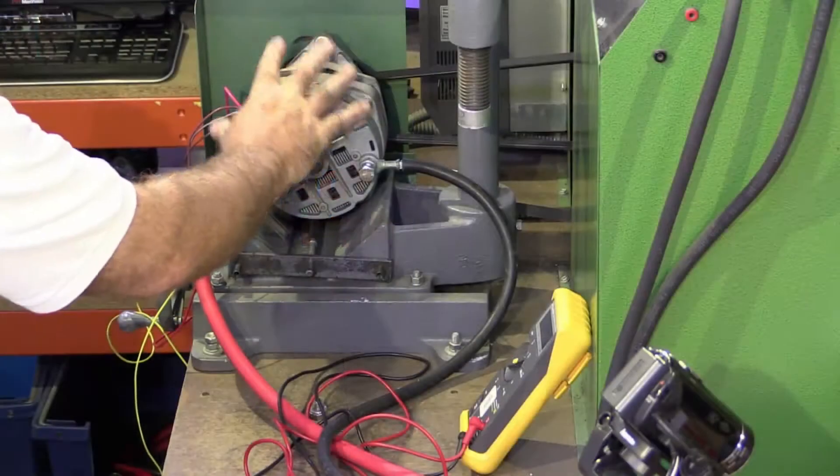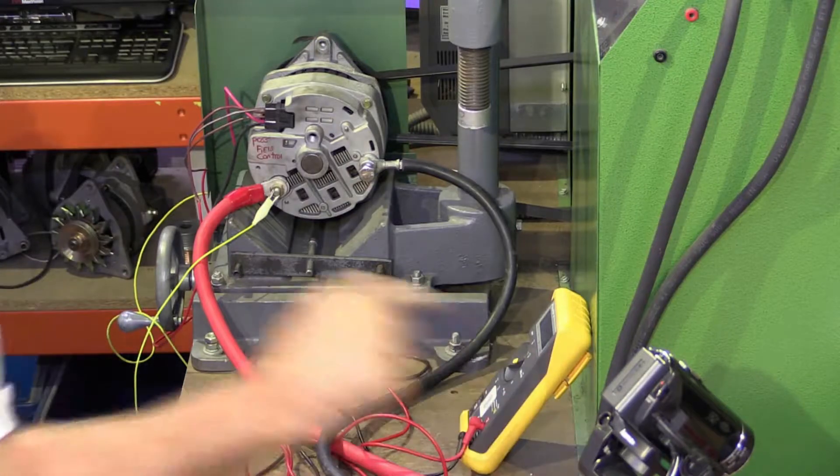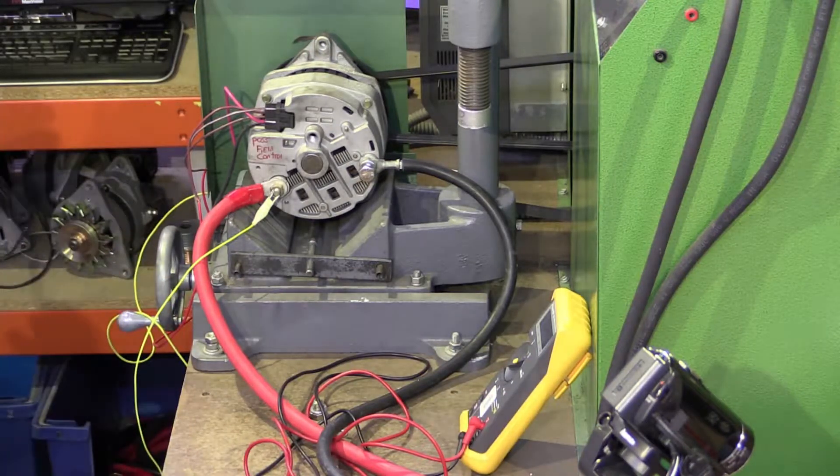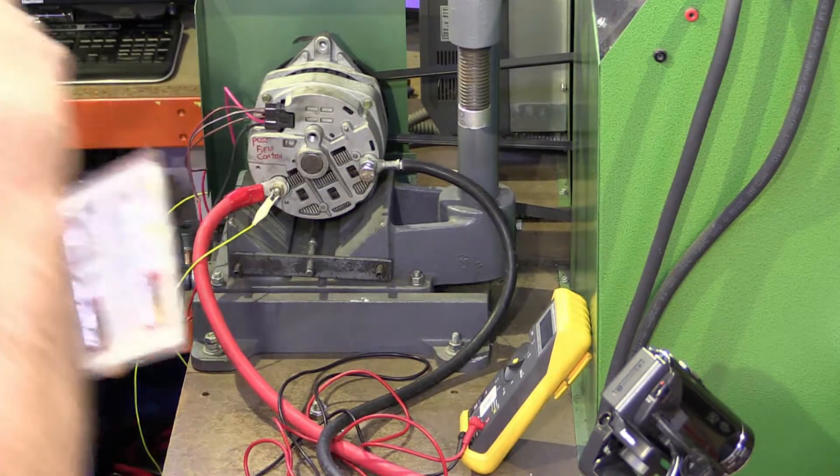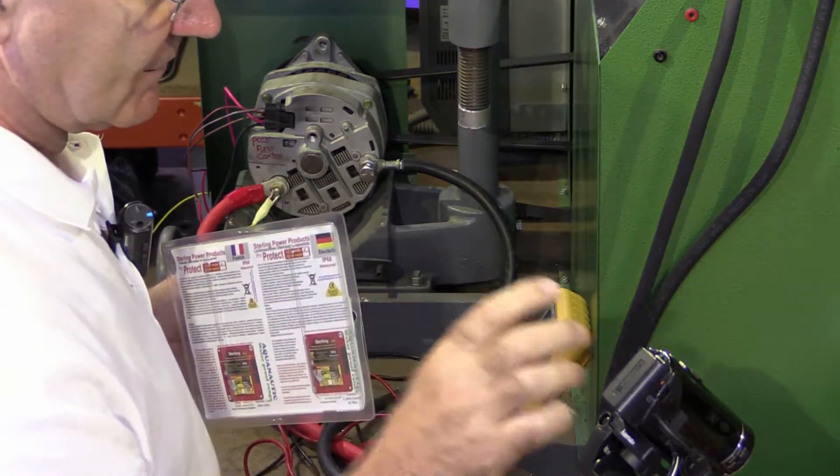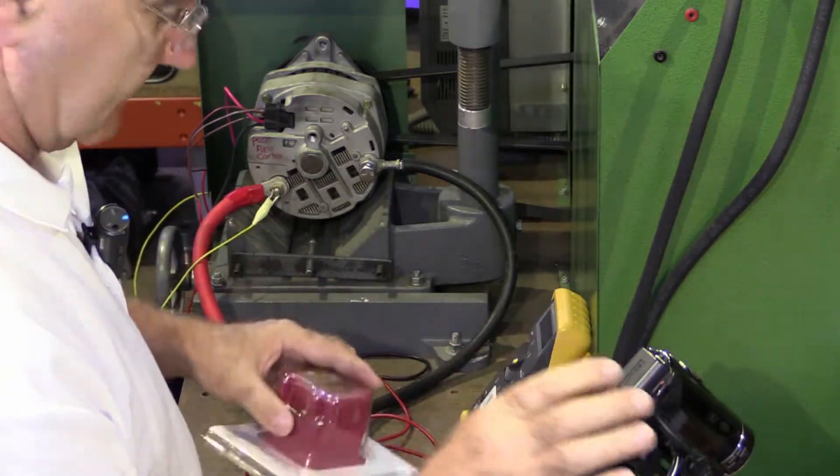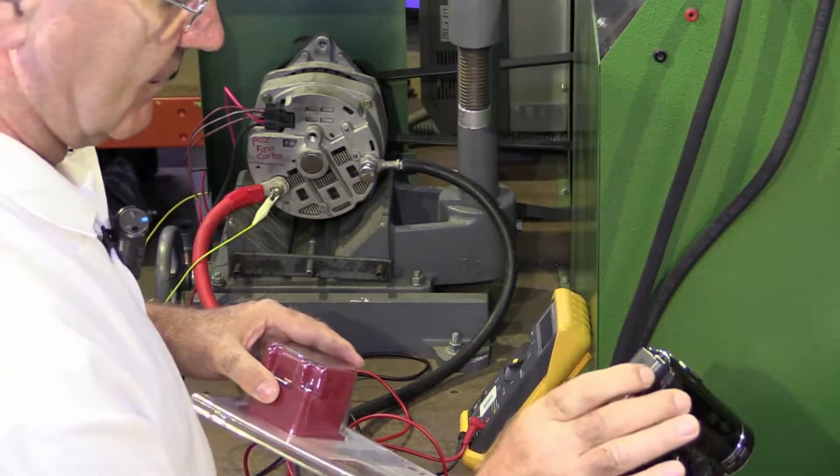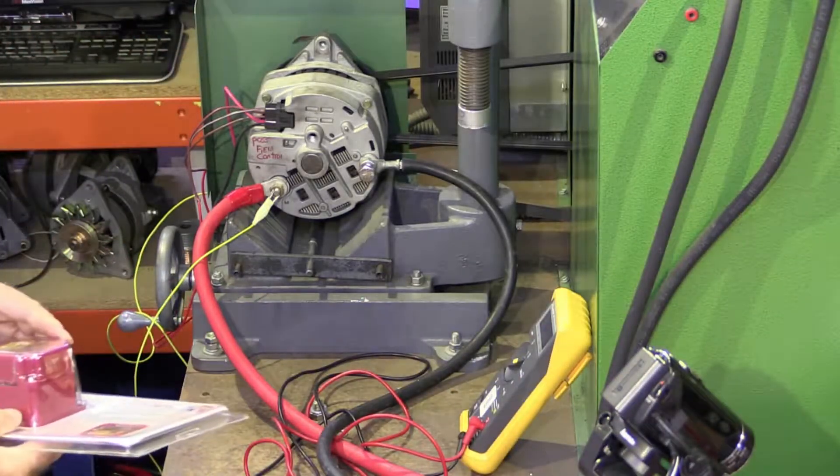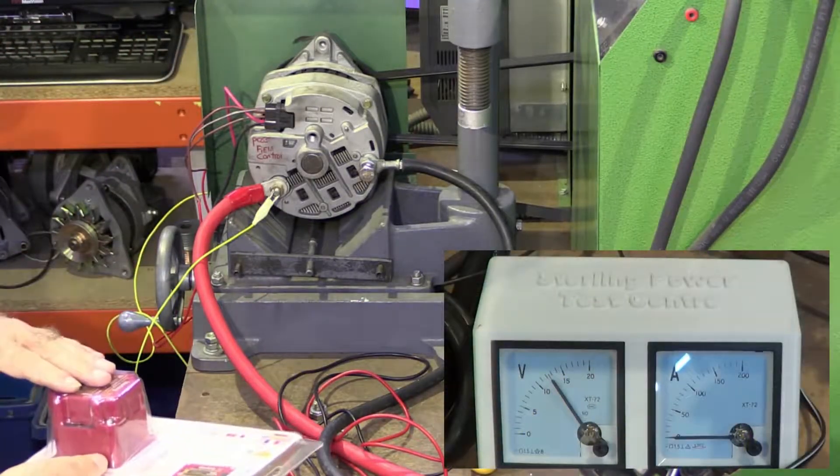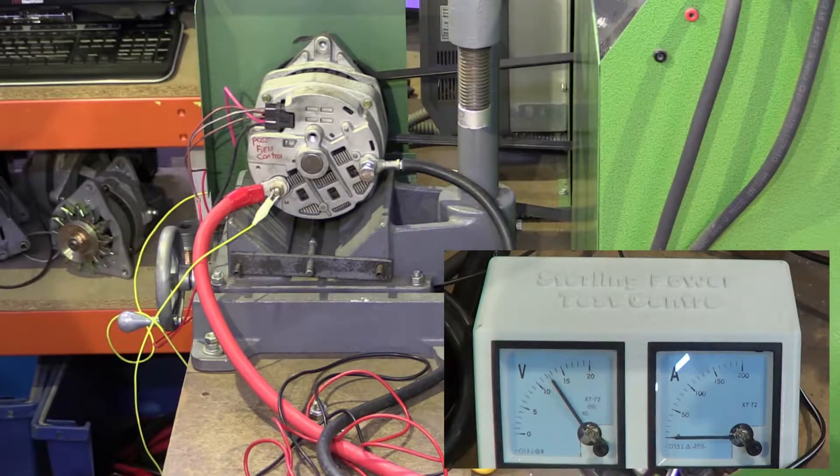Here we have an alternator set up ready to go and we have an ammeter and a voltmeter that we will record in real time so that you can actually see what's going on. Let's start by firing this alternator up and getting it working.